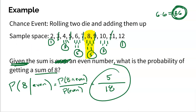Think about this: what is the probability of getting a sum of seven given that the sum is an even number? That would be impossible, because you can't be seven and even at the same time. Easy problem — hopefully that one wasn't too bad.